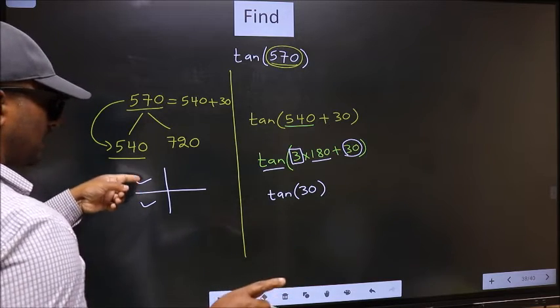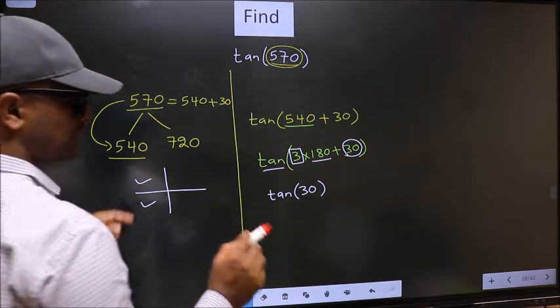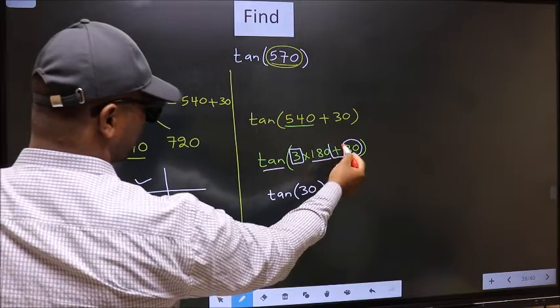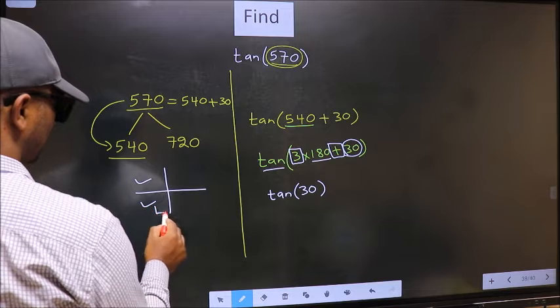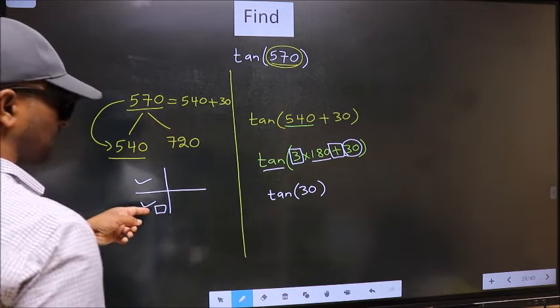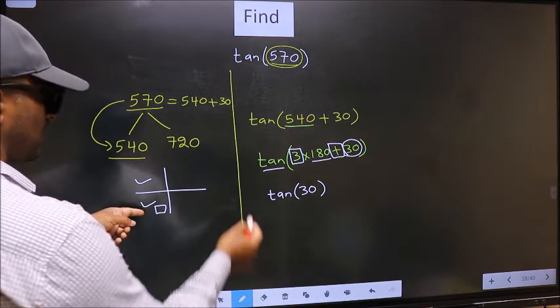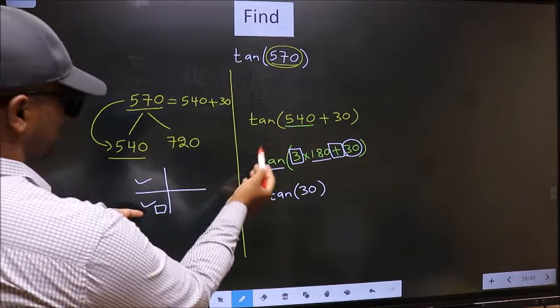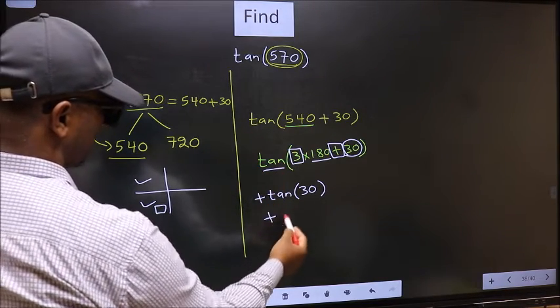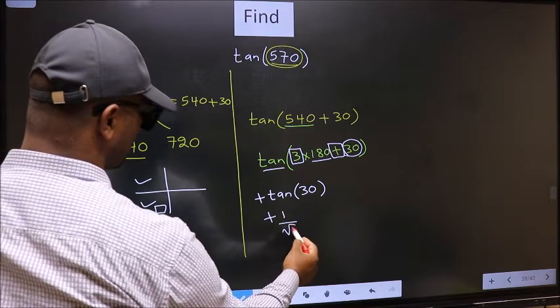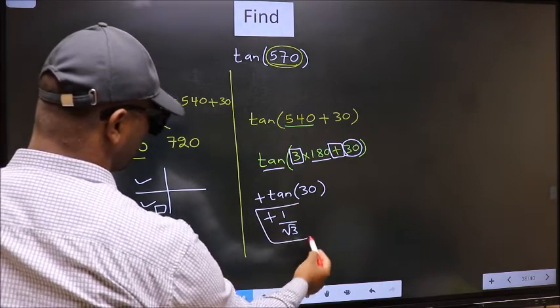So now to select the quadrant, we should look at this symbol. Here we have plus plus, that means the angle lies in the third quadrant. And in the third quadrant, tan is positive. So we should put plus. So plus tan 30 is 1 by root 3. This is our answer.